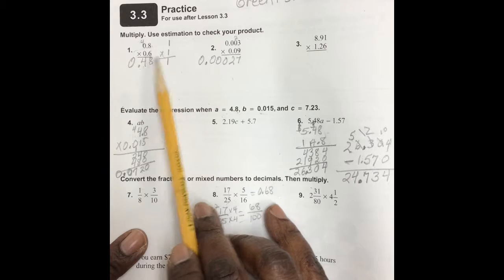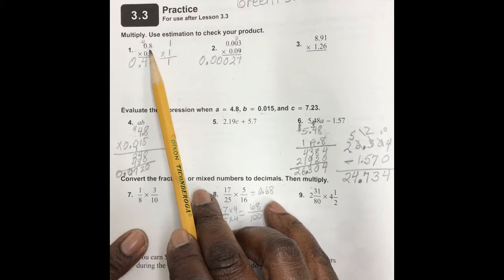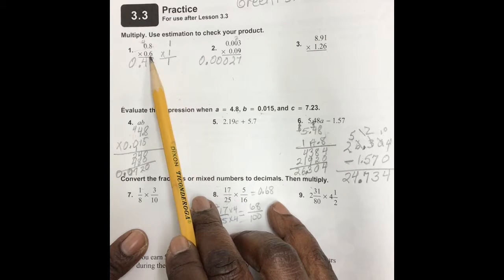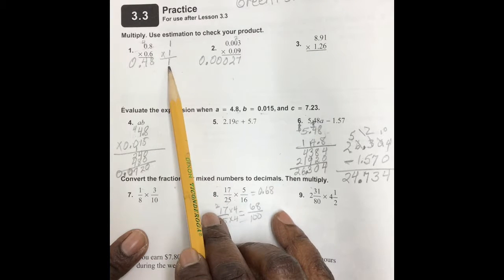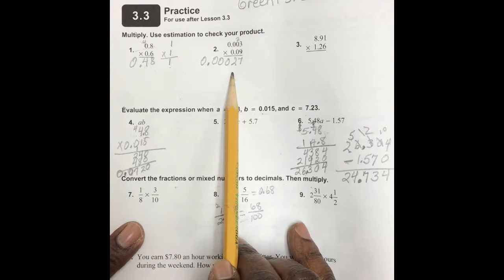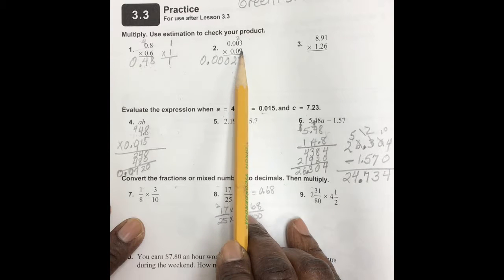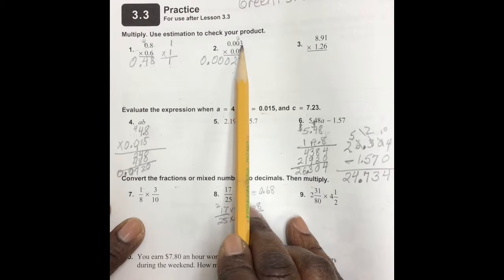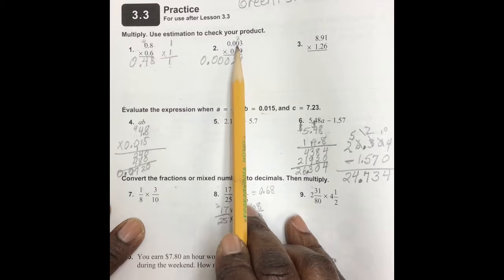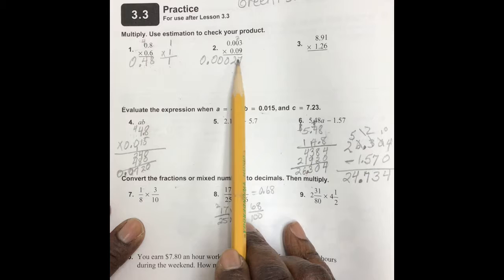Okay, now the even numbers, we follow through by multiplying nine times three. It's 27 because it gave us a seven, and then nine times zero is zero plus two, we have a 27 here.